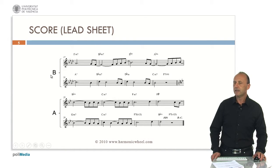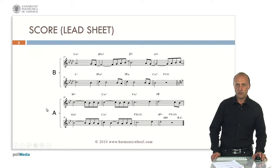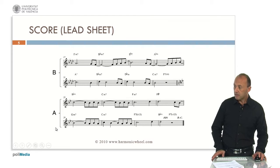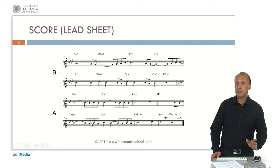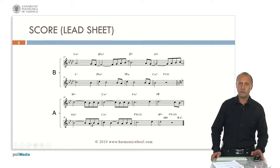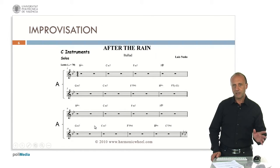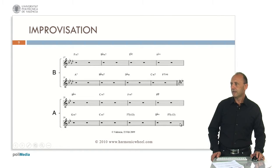eight bars. Then phrase B, which is different and is called the bridge. And then again phrase A. Usually in jazz, first the head is played — the head is this music. Then the solos, and to perform the solos we have to mentally delete all the melody and just keep the chords. And then the head is played again.